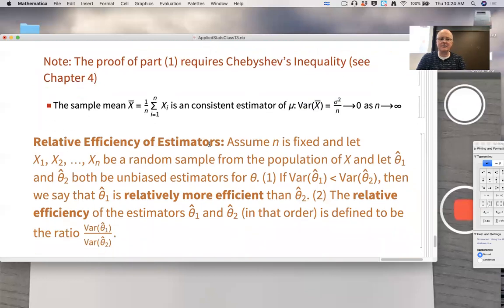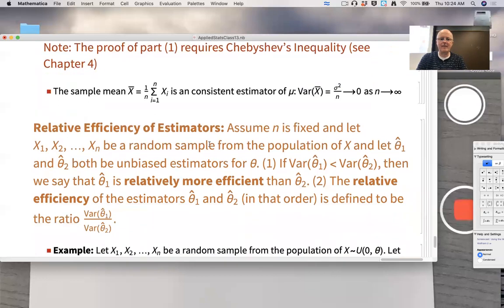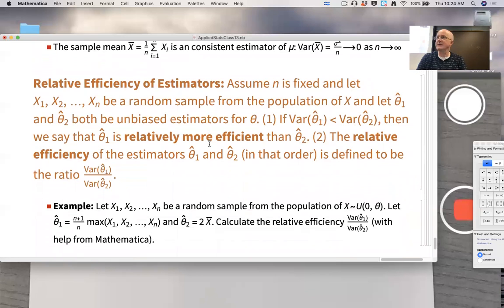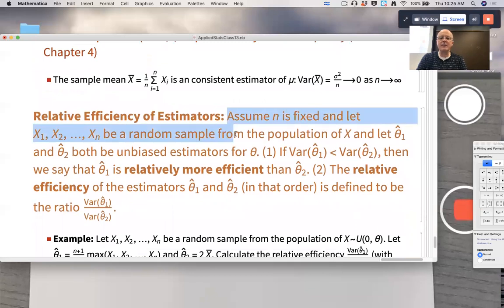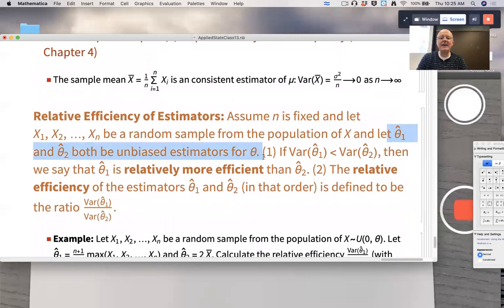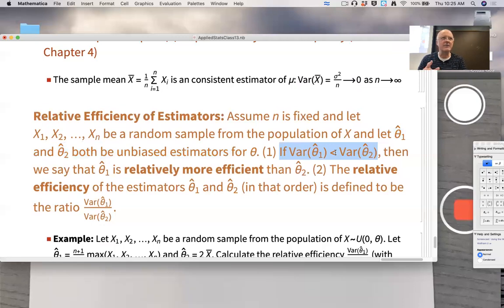Relative efficiency of estimators. We are going to try to start an example by hand here after I talk about this. Once again, assume N is fixed. I've got a random sample from a population. Let theta 1 hat and theta 2 hat both be unbiased estimators for theta. So they're both unbiased. Which one is relatively more efficient? It's the one with the smaller variance.